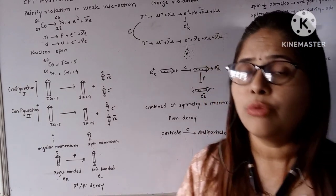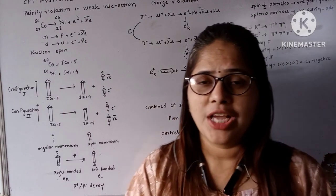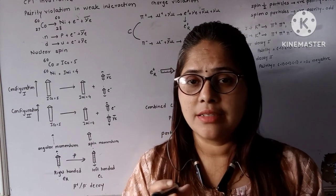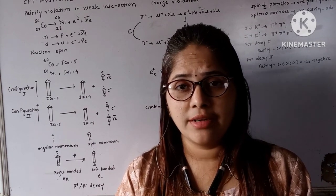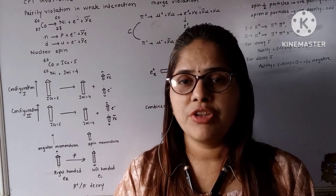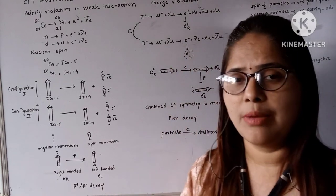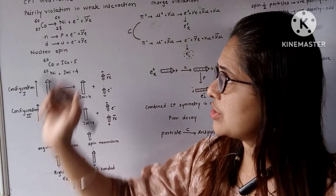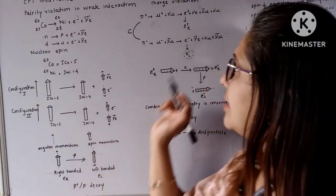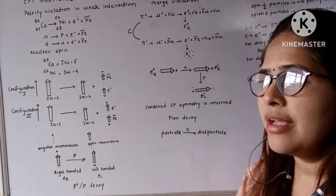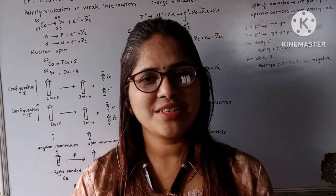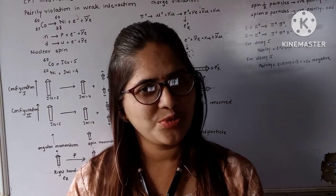To summarize: charge, parity, and time are not conserved in weak nuclear interactions — their violation is a feature of the weak nuclear interaction. We have seen three examples: parity violation in beta decay, charge violation in pion decay, and combined charge-parity violation in kaon decay. Keep studying, stay focused. Thank you for watching.